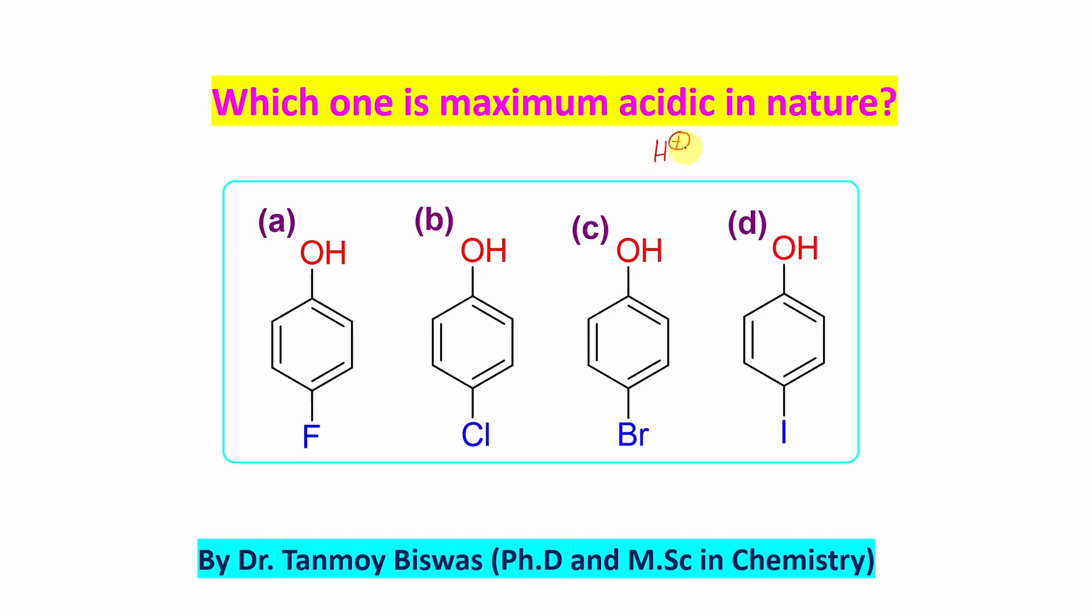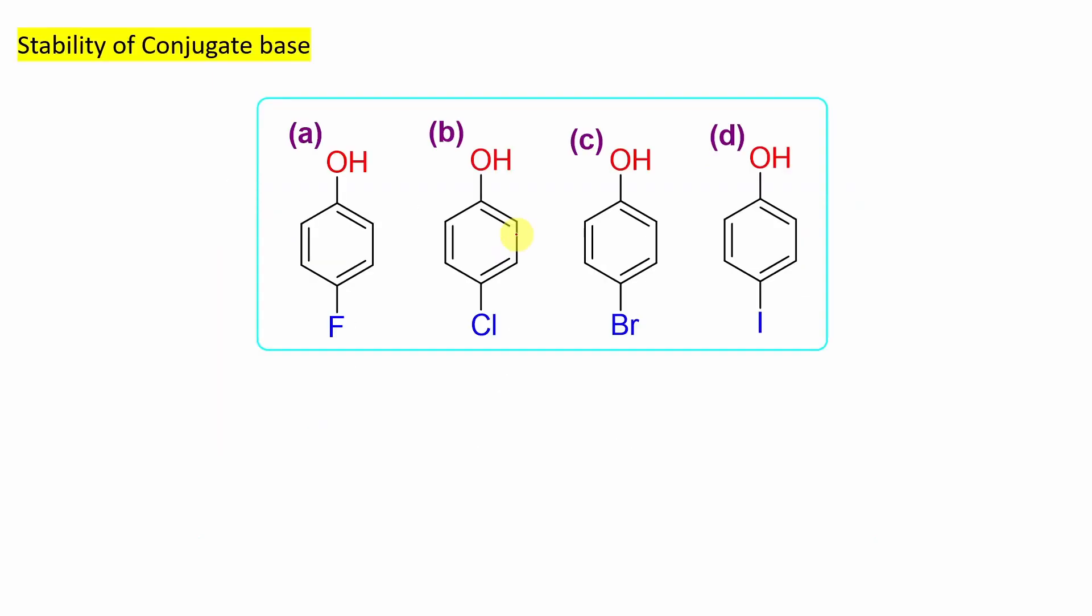Maximum acidic means proton releasing capability and this depends on the stability of the anionic part, I mean the conjugate base. So let's draw the conjugate base first. From 4-fluorophenol this is the phenoxide. This is the conjugate base. Here from chlorophenol you can expect the chlorophenoxide, 4-chlorophenoxide. Similarly bromophenoxide and here you can expect 4-iodophenoxide. So we need to explain which one is more stable.